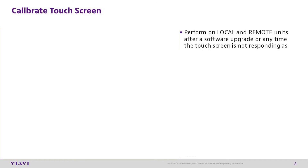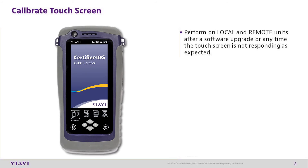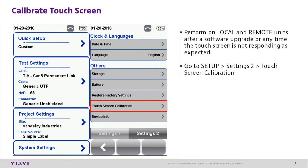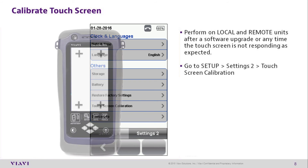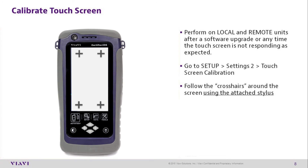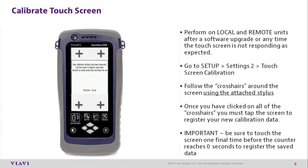Calibrating the Touchscreen: Perform a calibration every time you upgrade the firmware. Push the Setup hard key, go to System Settings > Settings 2 > Touchscreen Calibration. Follow the crosshairs around the screen using the attached stylus. Once you've clicked on all of the crosshairs, you must tap the screen to register the new calibration. Touch the screen one final time before the counter reaches 0 seconds in order to save the new calibration.